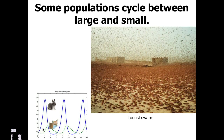You can see the same sort of cyclic pattern with the snowshoe hare and the fox in the image below. As the rabbit population increases, so too does the fox population following that, and once the rabbit population dwindles, then the fox population dwindles along with it.